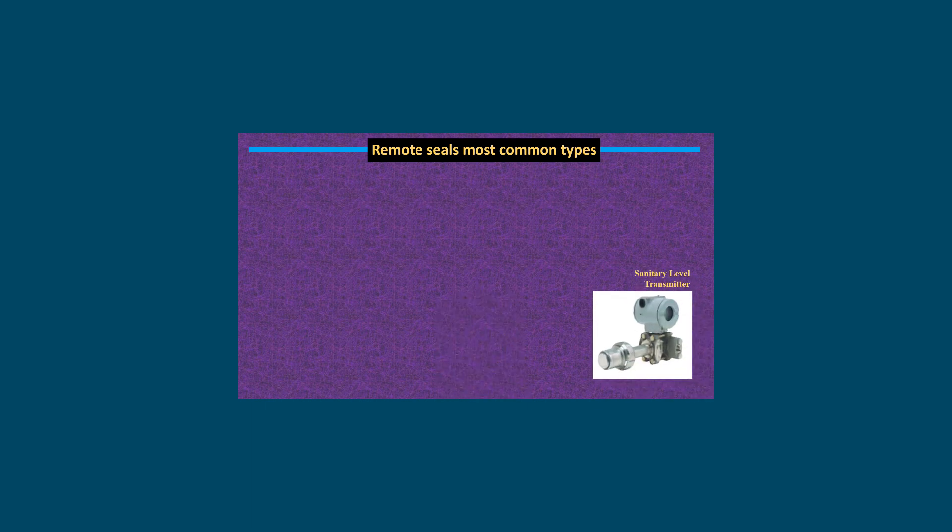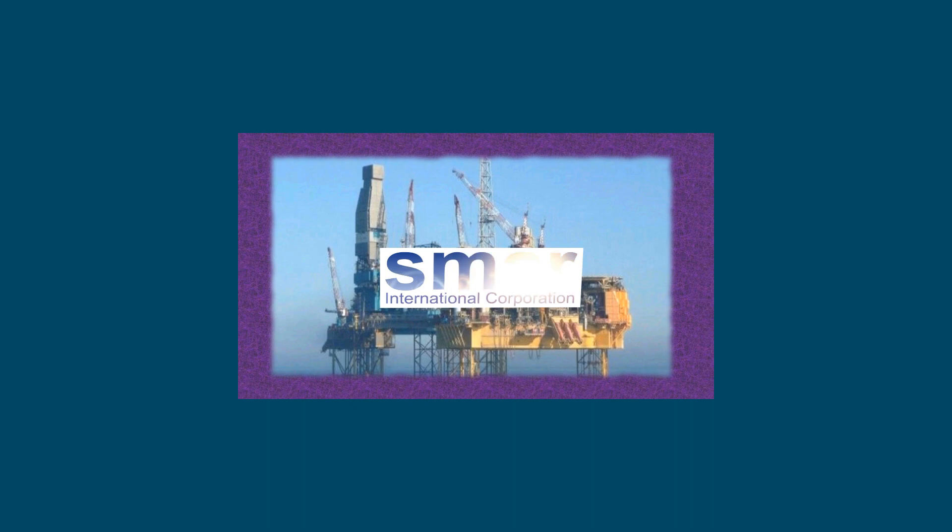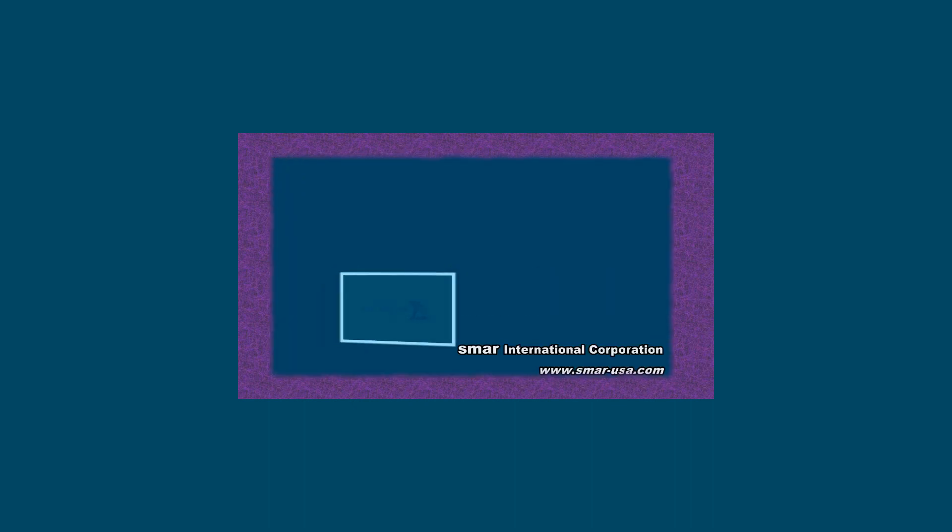And of course, for the same situation, you can have a sanitary level transmitter that will be placed with a clamp or like I said before, one or two bolts for easy removal. So here are probably the most typical ones. There are more, of course, but we're going to stop here and consider this the introduction for remote seals. Thank you so much for watching and keep looking for more tutorials.